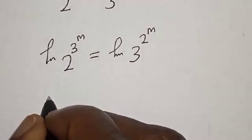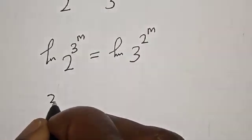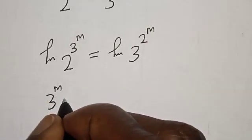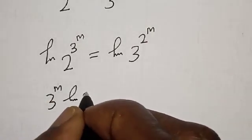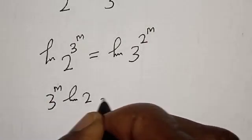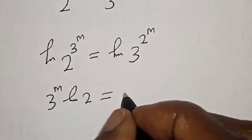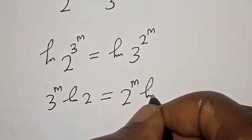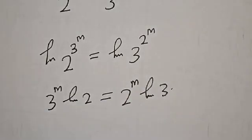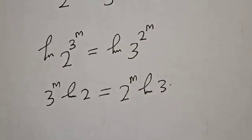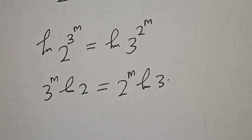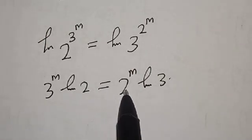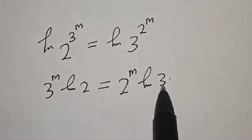Now, applying the power rule of logarithms, we have 3 raised to power m times natural log of 2 is equal to 2 raised to power m times natural log of 3.